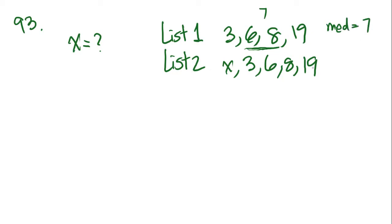For list two, is there a 7 here? No, but we have x. And in order for the median of list two to be the same as list one, x would actually have to be 7. And that gives us the answer for number 93, which is answer choice B.